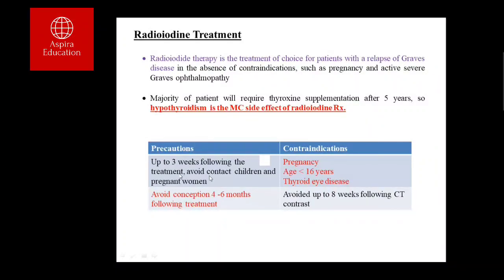Precautions include avoiding close contact with children and pregnant women, and avoiding conception for four to six months after treatment. Contraindications include pregnancy, very young age, and active thyroid eye disease (radioiodine can worsen ophthalmopathy). It should also be avoided for up to eight weeks following CT with contrast, as the iodine load from contrast would prevent uptake of additional radioiodine by the gland. Surgery is reserved for patients with very large goitre, intolerance to anti-thyroid drugs, or contraindications to radioactive iodine.